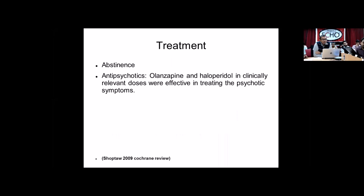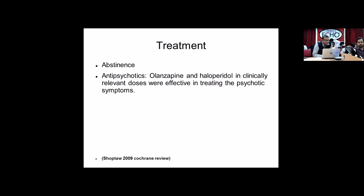Coming to treatment, the most obvious answer would be abstinence. There has been one Cochrane review on treatment of methamphetamine-induced psychosis, done in 2005. Of all the studies that examined treatment for this condition, only one study qualified for the review. They studied about 58 patients with psychosis divided into olanzapine and haloperidol groups and found no significant differences between both, except that haloperidol had more propensity to cause EPS. Treatment would essentially involve abstinence, treatment with antipsychotics, and monitoring the longitudinal course of the illness.